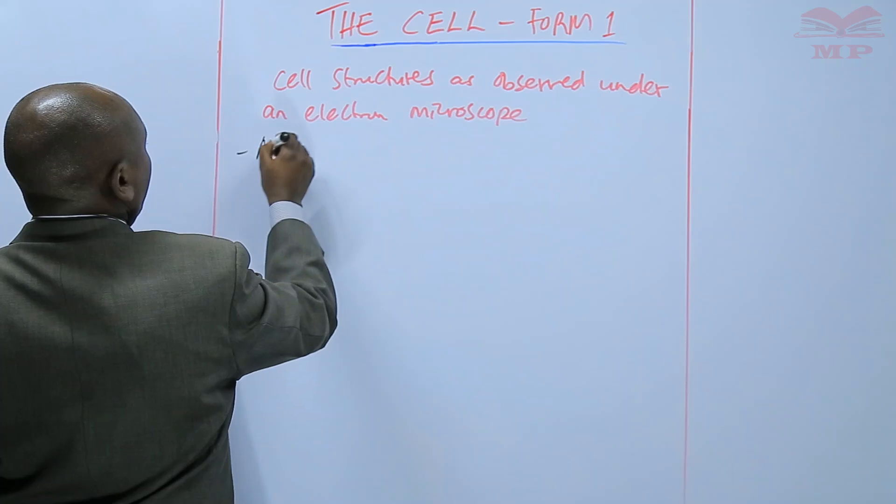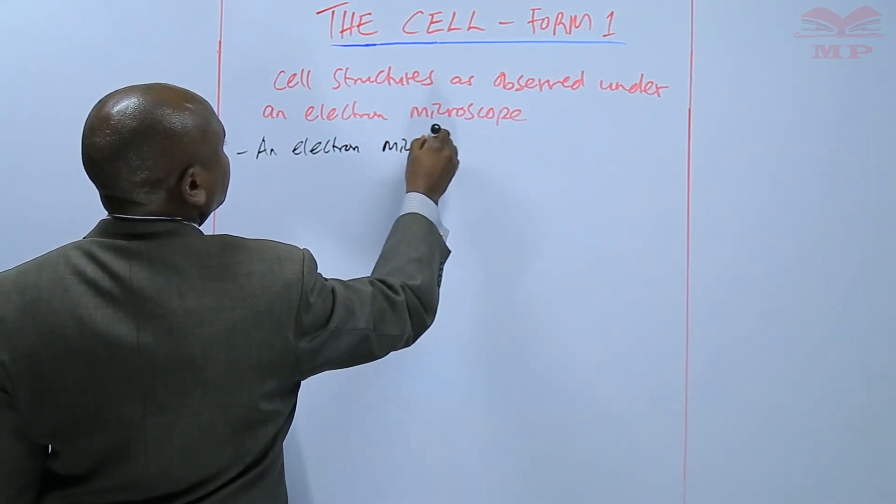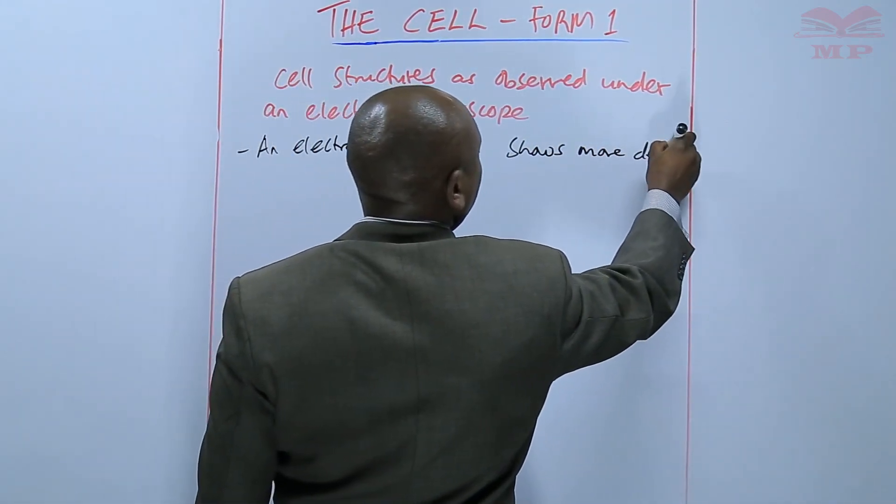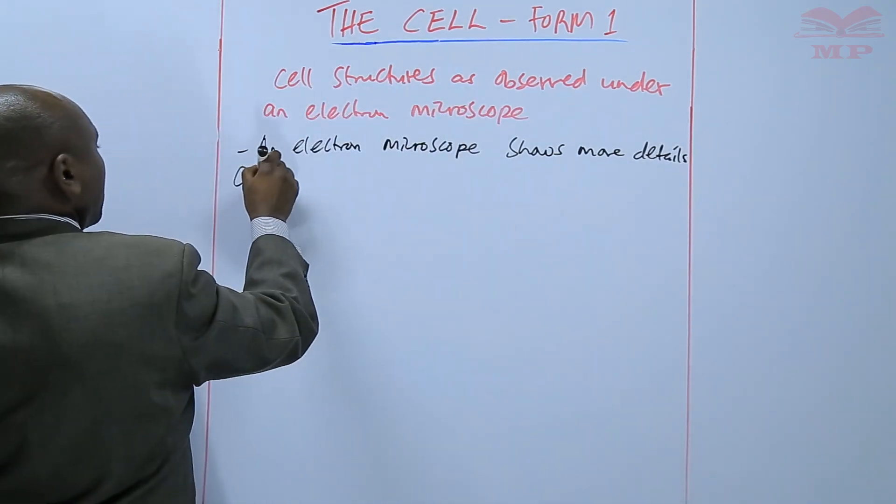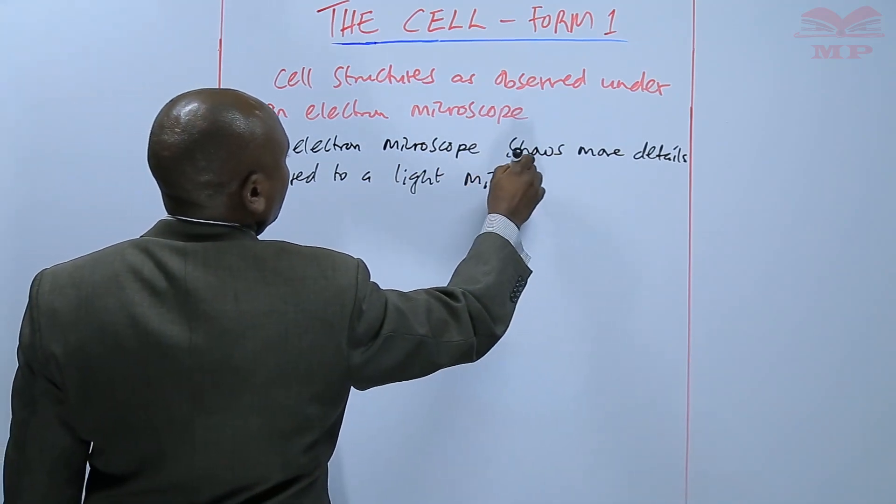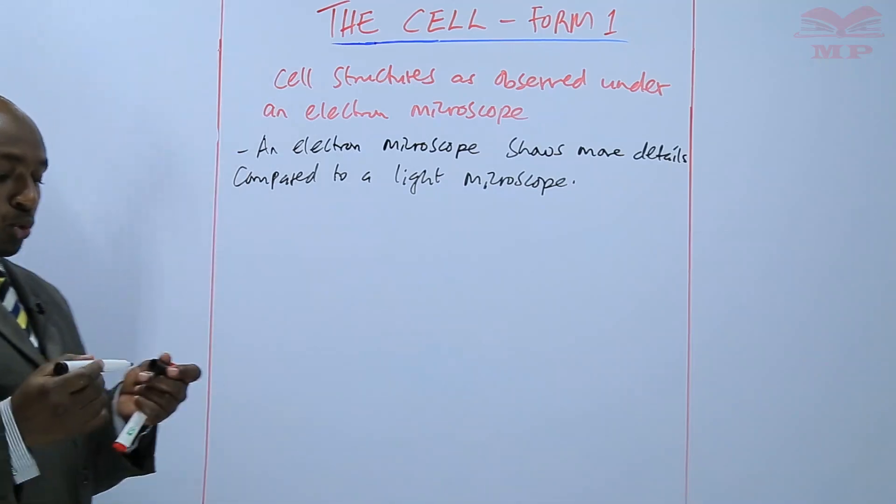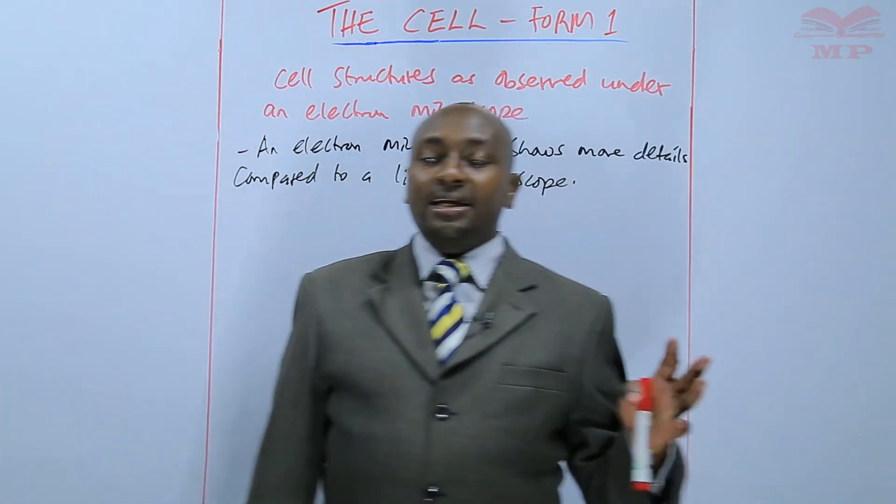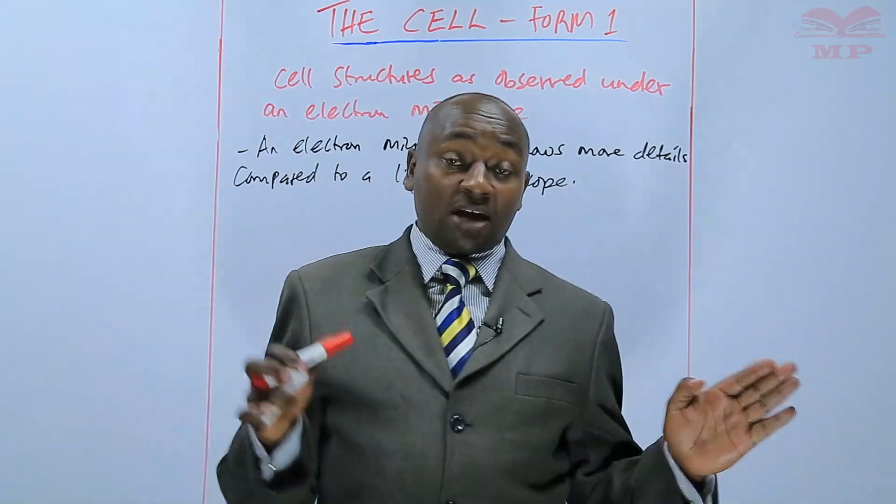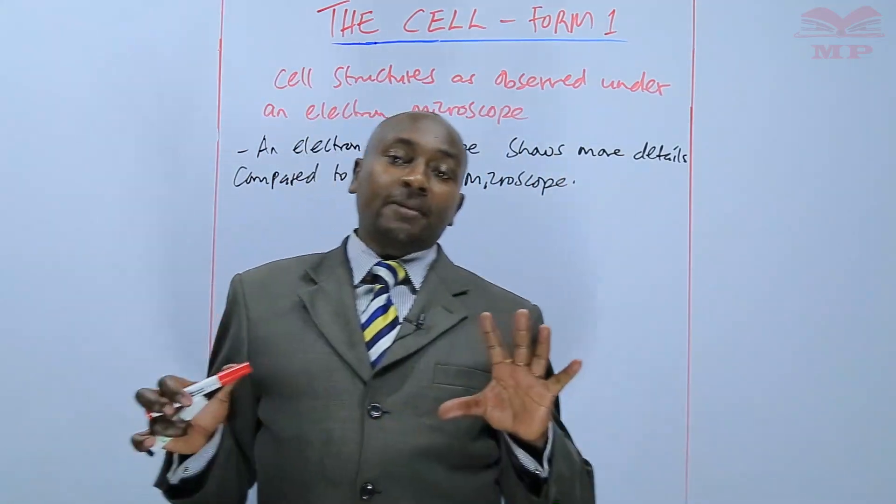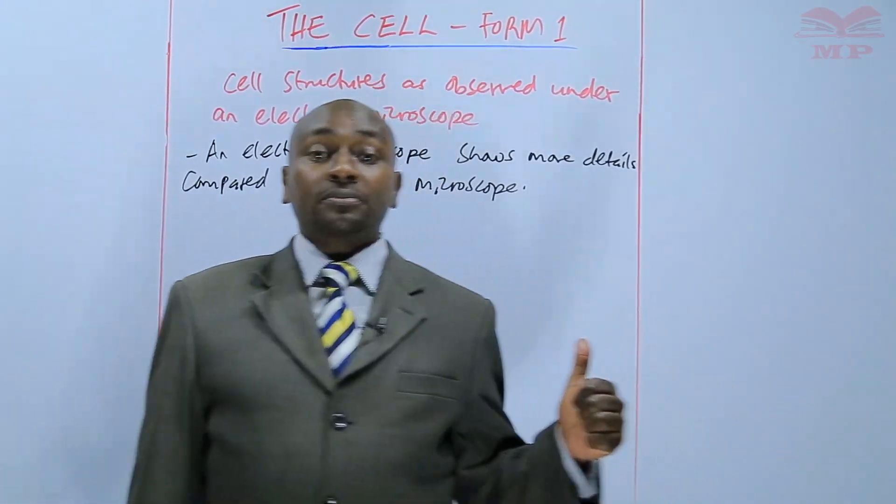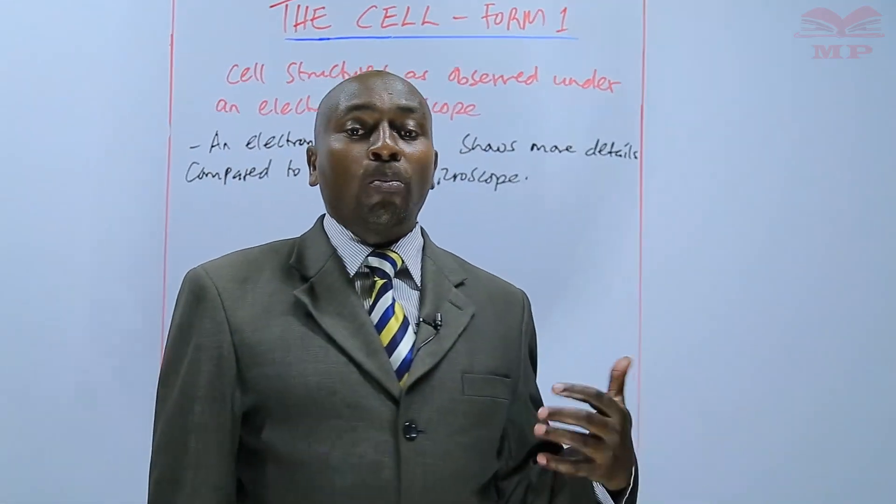So an electron microscope shows more details compared to a light microscope. We also looked at the cell under a light microscope whereby we studied the plant cell and the animal cell as observed under the light microscope. We were able to only view a few structures there. When it comes to electron microscope we'll be able to view more details or more structures.